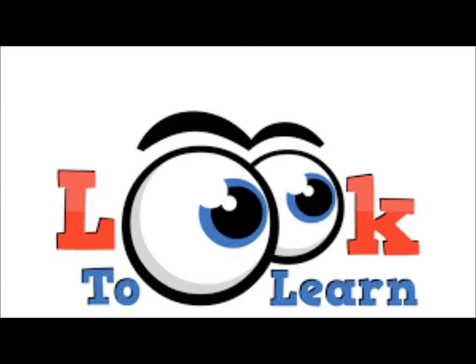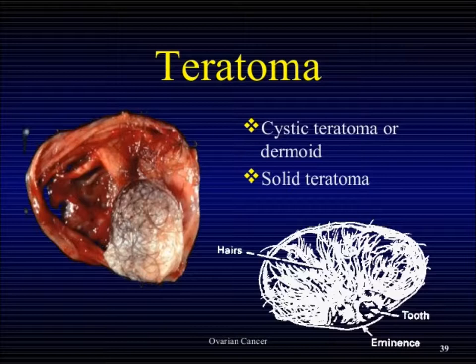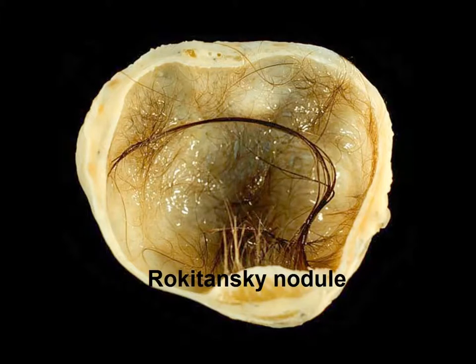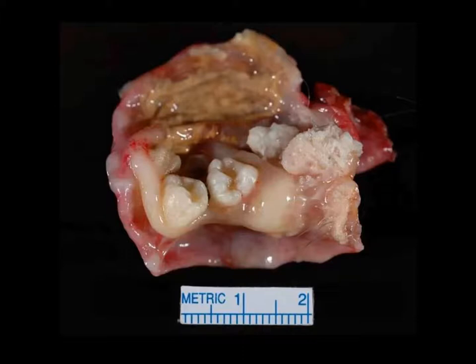Usually ovarian masses are excised and submitted for examination in the pathology lab. On gross appearance — the naked eye appearance — they are cystic, and if you cut open they are filled with hair shaft and sebaceous material. You can appreciate hair shafts rising from a prominent nodule which is called the Rokitansky nodule.